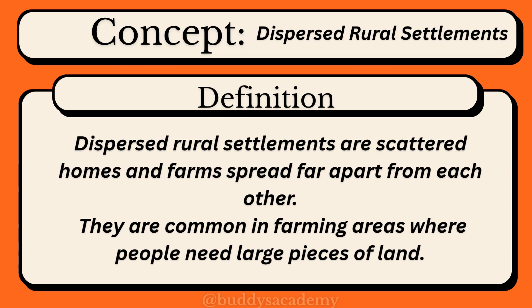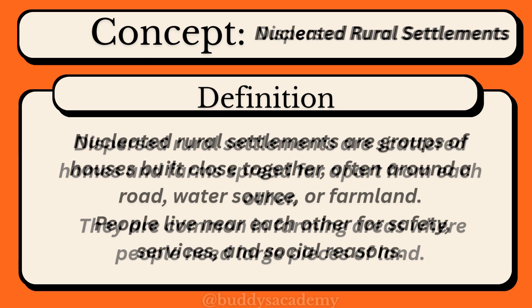Dispersed rural settlements are scattered homes and farms spread far apart from each other. They are common in farming areas where people need large pieces of land.